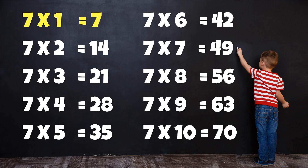Table of 7: 7×1=7, 7×2=14, 7×3=21, 7×4=28, 7×5=35, 7×6=42, 7×7=49, 7×8=56, 7×9=63, 7×10=70.